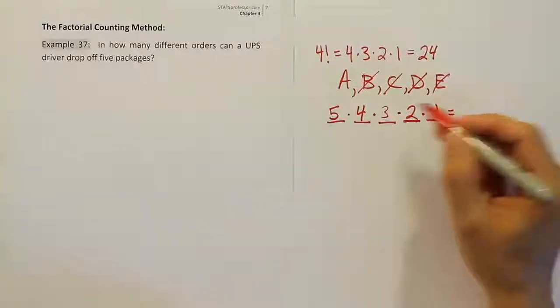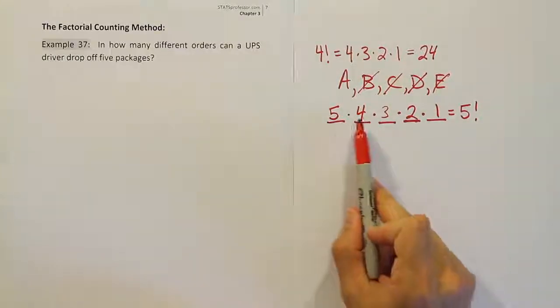And then basically, we have the answer. Now you'll see that the answer here works out to be five factorial by definition, because it's five, four, three, two, one, all multiplied. And we could memorize that that is 120, or you can just work it out. That would be 20 times six, which is 120, or you can use your calculator.